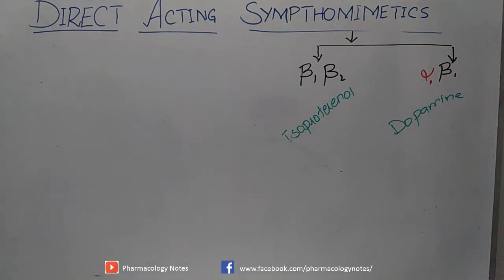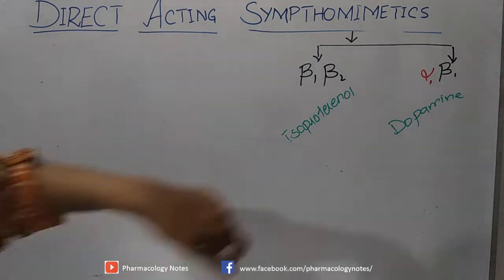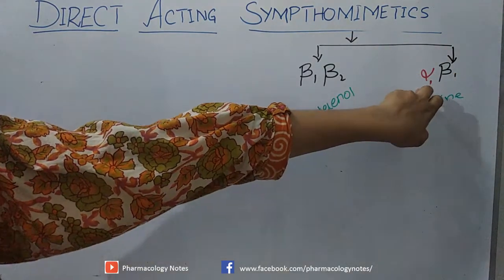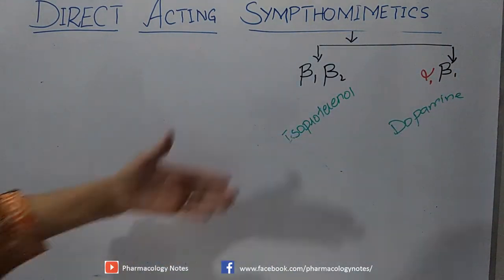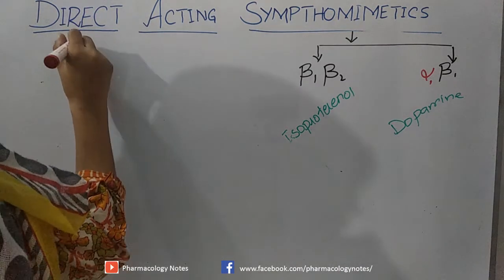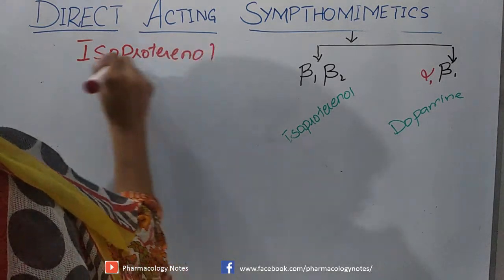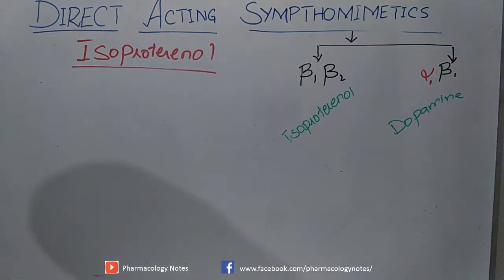Now there is another drug which binds non-selectively to Beta-1 and Beta-2 receptors — it has affinity and efficacy for both Beta-1 and Beta-2. Since adrenergic receptors are of Beta and Alpha types, a drug which acts non-selectively on Beta receptors is isoproterenol. That drug is isoproterenol.